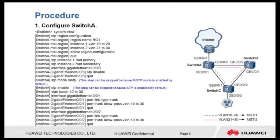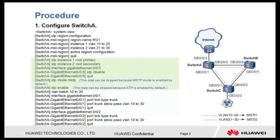Let's move to the configuration procedure. Step 1: Configure switch A. Configure the MST region name of switch A, map VLANs to MSTi1 and MSTi2, and activate the MST region configuration. Configure switch A as the root bridge in MSTi1 and secondary root bridge in MSTi2. Disable MSTP on ports that do not participate in MSTP calculation. Configure switch A to work in MSTP mode and enable MSTP. Configure layer 2 forwarding on switch A.